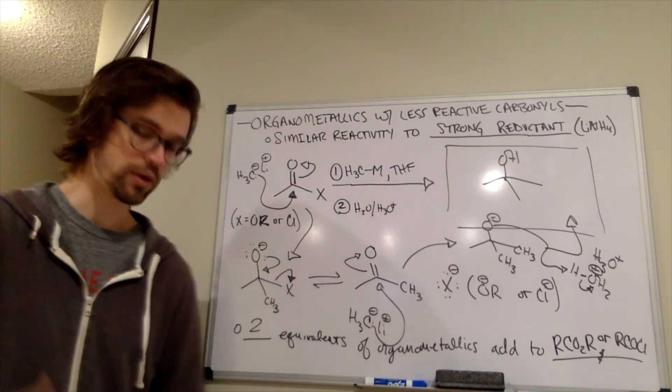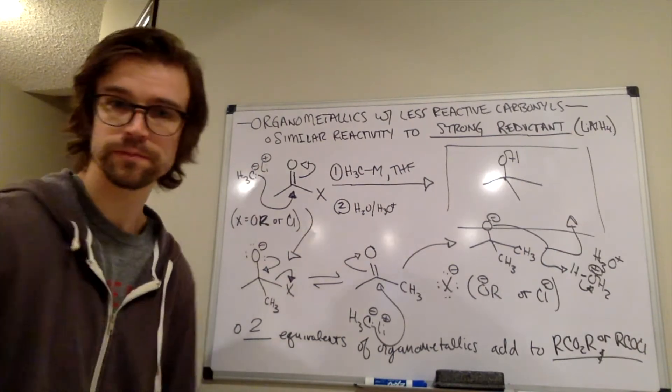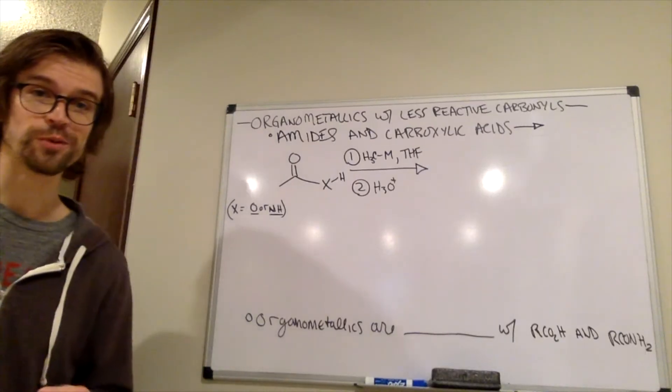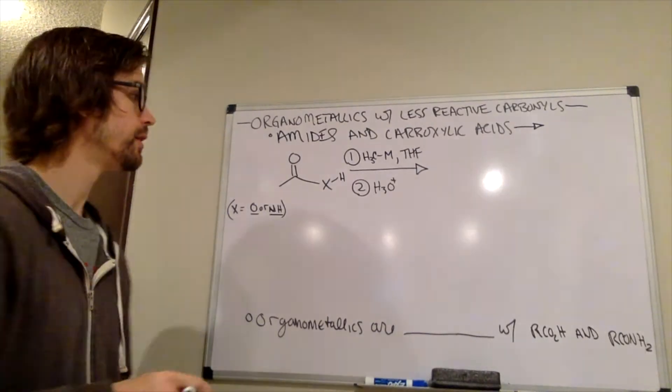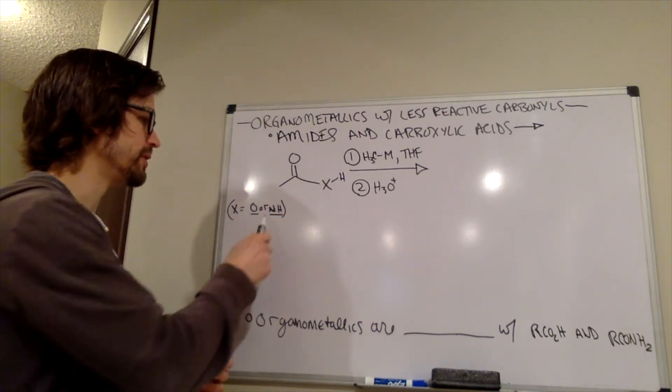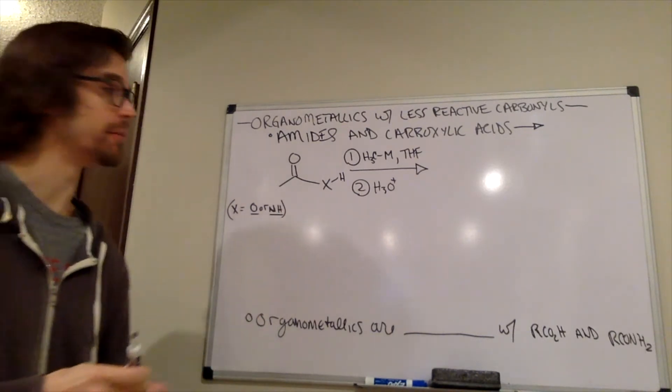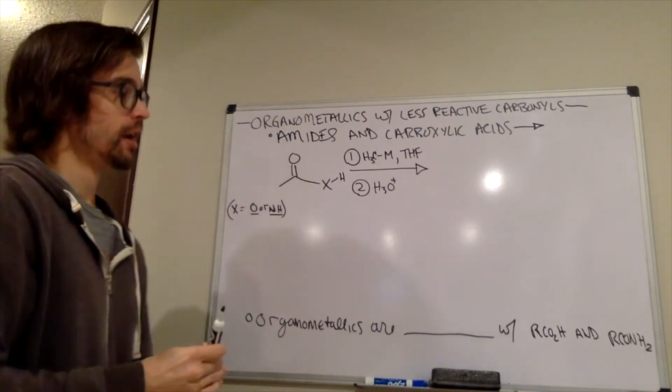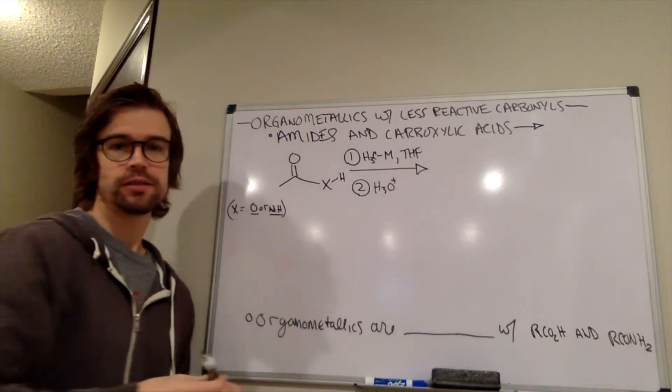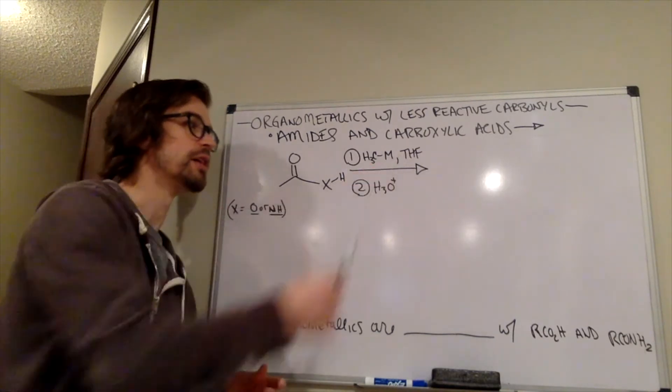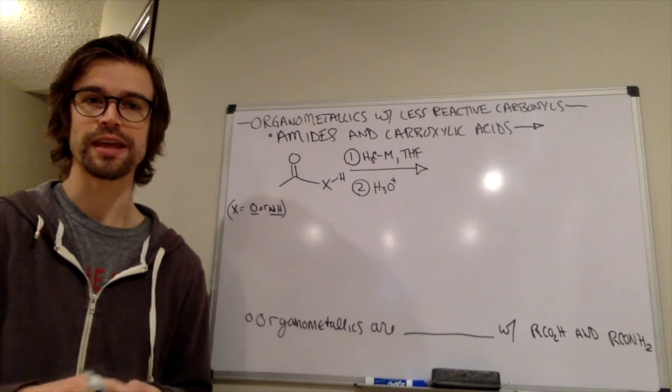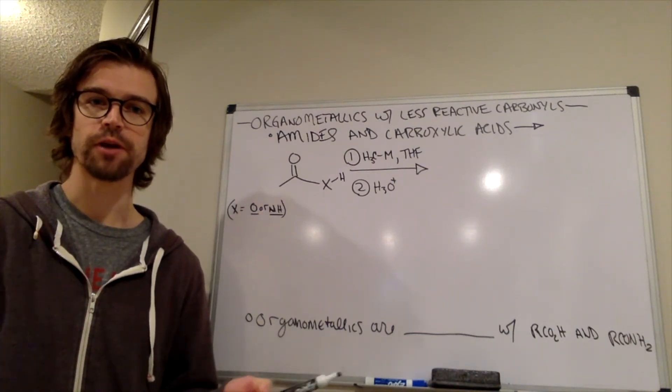So yeah, so now we're going to transition to another type of carboxylic acid derivative. All right. So what do these organometallic reagents do with carboxylic acid? So if this X is an O, that would be a carboxylic acid or amides. So if this X was an NH, that would be an amide. And what did we talk about organometallic reagents? They need to have an aprotic solvent. And so I wrote in THF for that. And the molecules that they're being reacted with cannot have acidic protons, right?